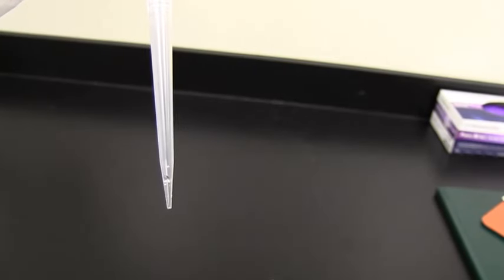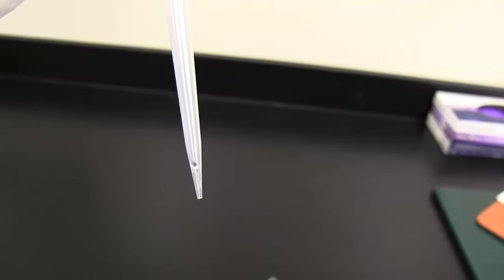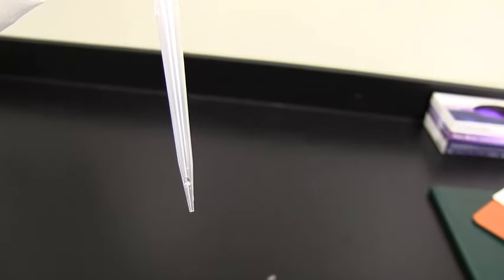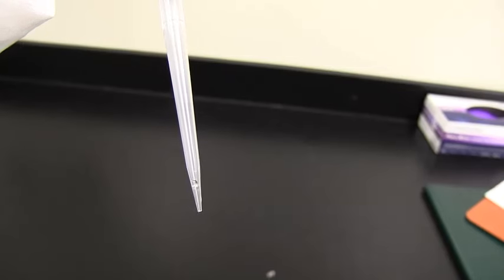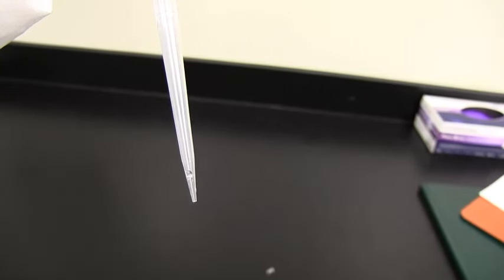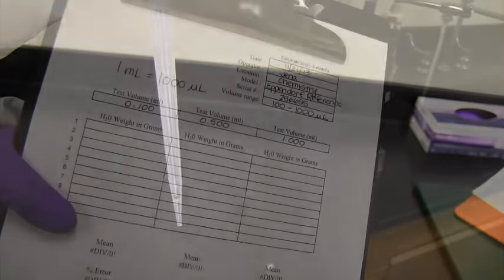So after we've dispensed the water out of the pipette, sometimes there's a little bit left over. And this is volume that's actually still left in here. So if we try to get another 500 microliters, it's actually going to be a little bit more than 500 microliters as this water is still stuck in here. So when this happens, we'll just take a new tip.